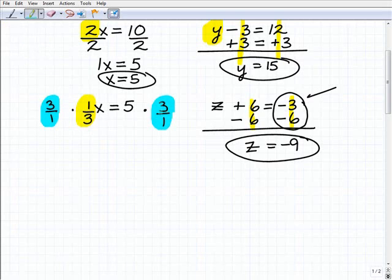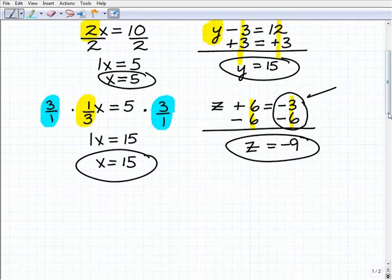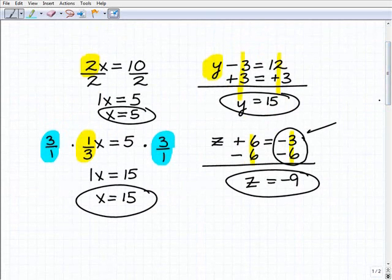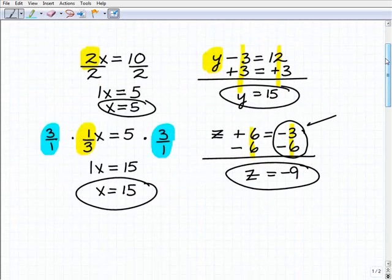So now I'm going to multiply both sides of the equation by the reciprocal. I got 3 over 1, or 3. So 3 times 1 3rd is what? Think about that, 3 times 1 3rd is 1, or 1x, so that's what I want. Then I have 5 times 3 over 1, or 5 times 3, that's 15, so you get x is equal to 15. You have to master these basic equations before you move on to more sophisticated equations.